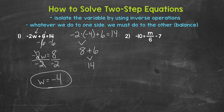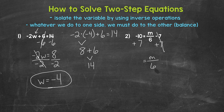We need to undo the subtraction first — we have minus 7. The inverse operation of subtraction is addition, so let's add 7 to the right side of the equation. Whatever we do to one side, we must do to the other. On the right side, we are subtracting 7 and adding 7, so these 7s cancel each other out. Now we have m divided by 6 equals negative 10 plus 7. We are starting at negative 10 and adding a positive 7, so we are increasing in value by 7, which gives us negative 3.